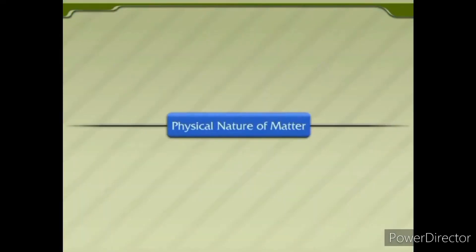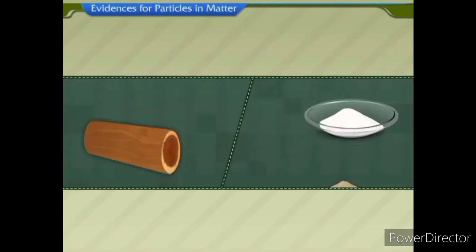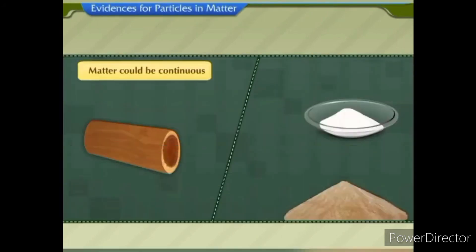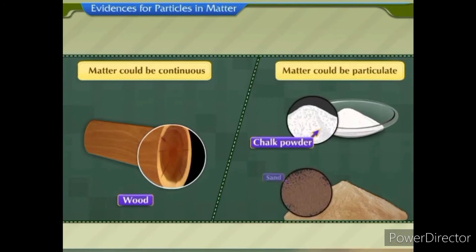Physical nature of matter. It was believed that matter could either be continuous, as in the case of a block of wood, or particulate, as in the case of chalk powder or sand. Let us perform an activity to determine whether matter is continuous or particulate.